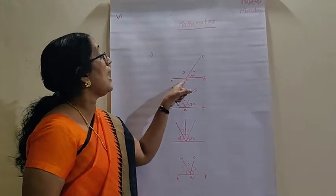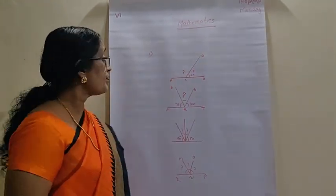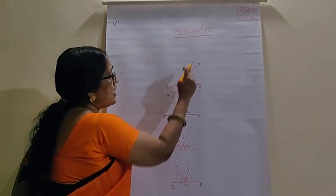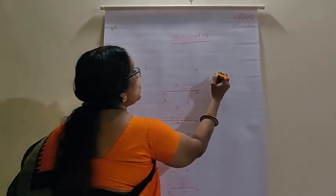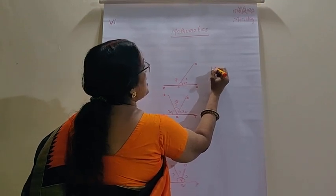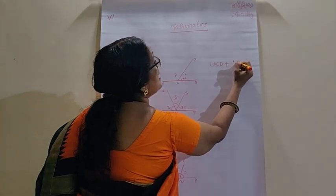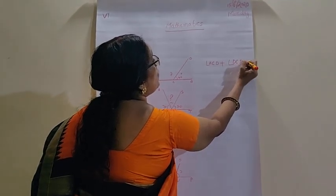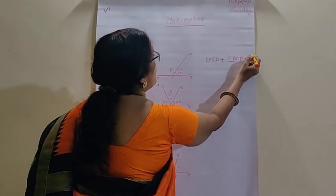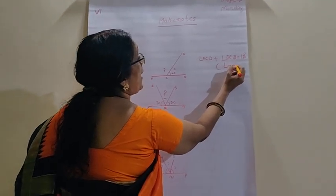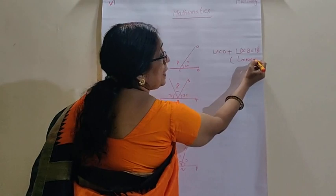We know ACD plus DCB equals 180 degrees. That is, ACD plus angle DCB equals 180 degrees. That you know. Why? Because it is a linear pair. Right? Linear pair.